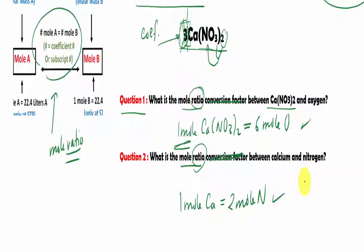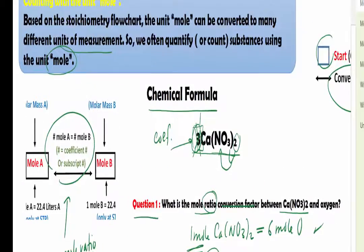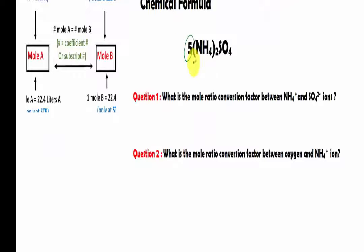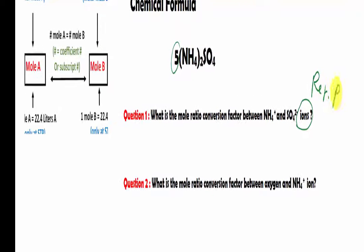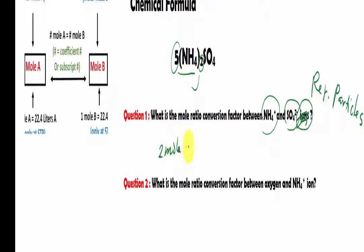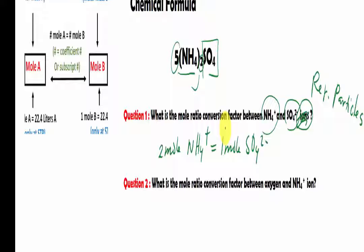Let's try another example. I have five moles of ammonium sulfate, and the question asks for the mole ratio conversion factor between ammonium and sulfate ions. Notice the term ion — we can still count in terms of mole. We just focus on the formula itself. I have two ammonium groups, so I say two moles of NH₄⁺. Sulfate is the remainder — only one sulfate — so we have one mole of SO₄²⁻.